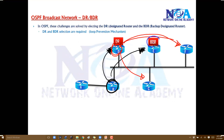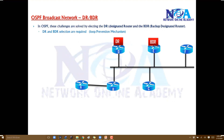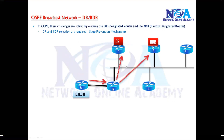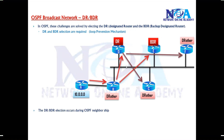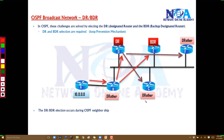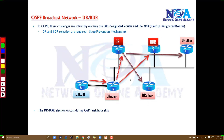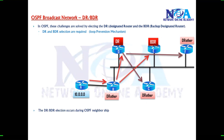The BDR remains idle and only takes up the role of DR when the DR goes down. Whenever a router receives any update, it passes the information to both the DR and BDR. The DR takes responsibility to pass it on to the remaining routers. Routers other than DR and BDR are called 'DR Others.' The DR/BDR election occurs during the OSPF neighborship process.